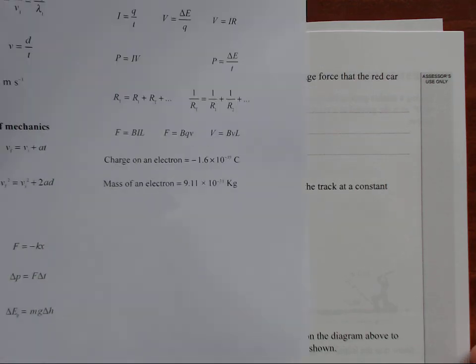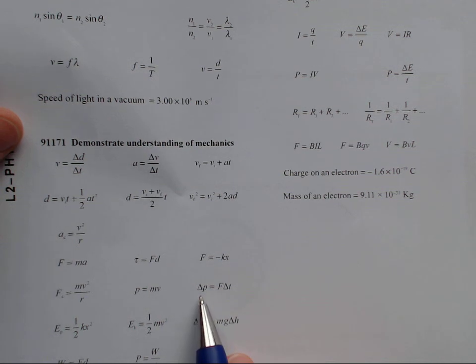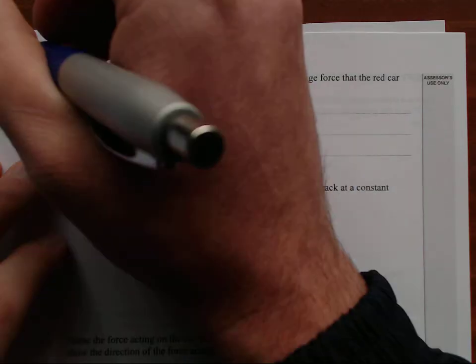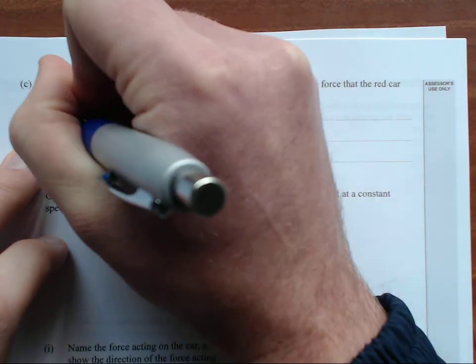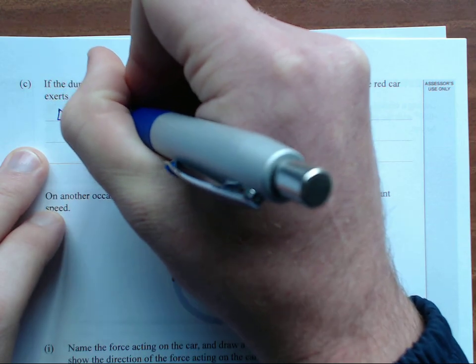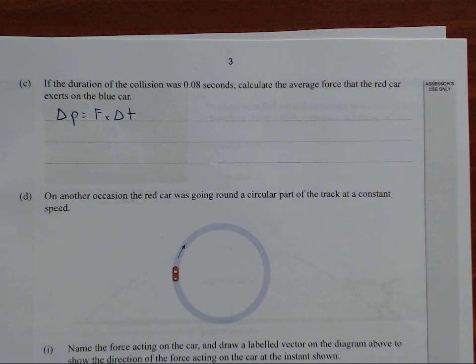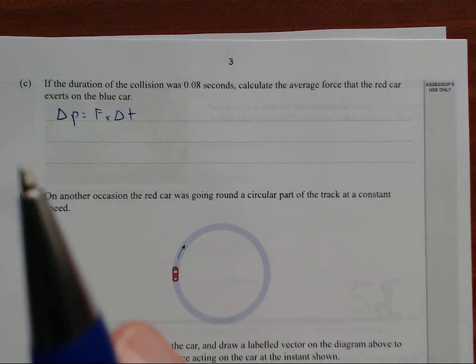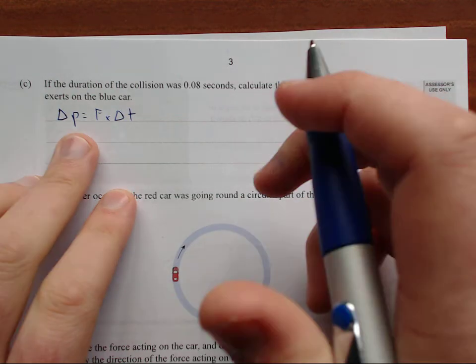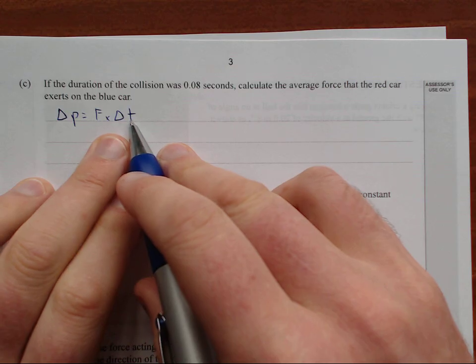So if we hop onto our formula sheet again, change in momentum equals force times change in time. So let's just write that in. Change in momentum equals force times change in time. And this is also impulse, so change in momentum is also known as impulse. So we've got time is 0.08.